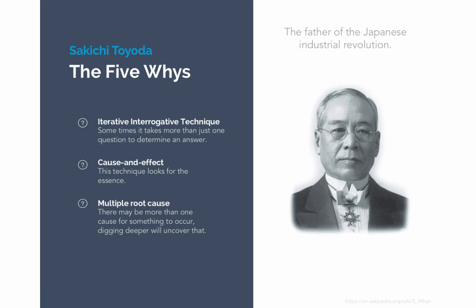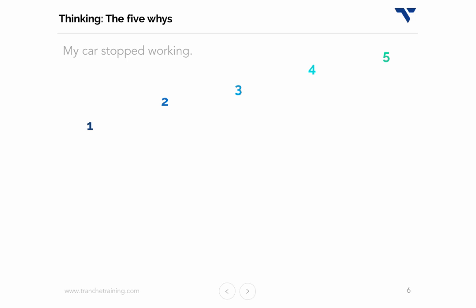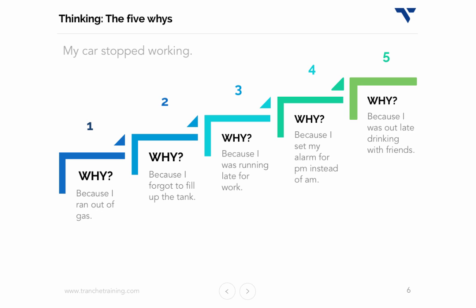Let's start with a simple example to illustrate this technique's power. Say you're talking to a co-worker before a meeting who looks flustered and you want to know why. They tell you their car stopped working and they were late for work. Why? Because they ran out of gas. Why? Because they forgot to fill the tank. Why? Because they were running late to work. Why? Because they set their alarm for p.m. instead of a.m. And finally, why? Because they were out late drinking with friends.